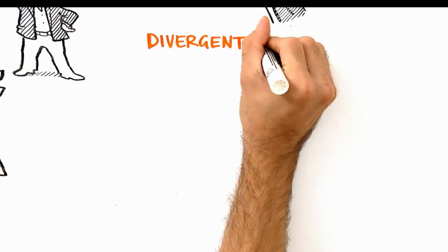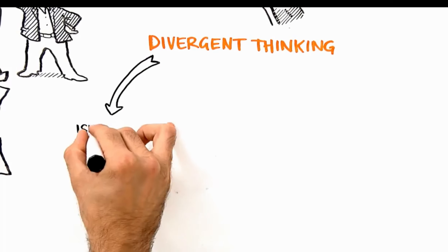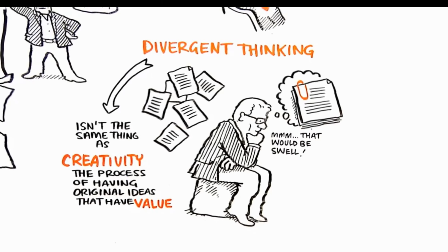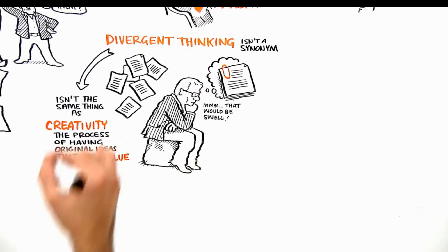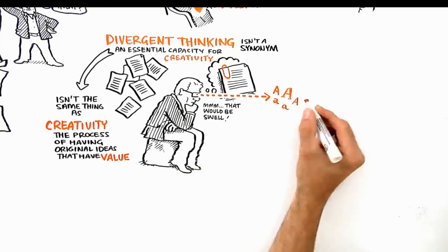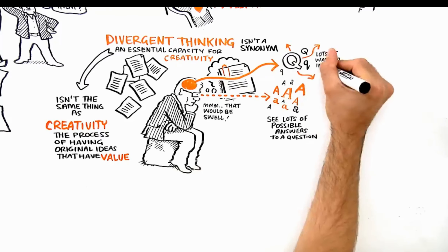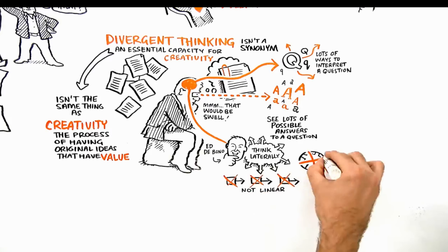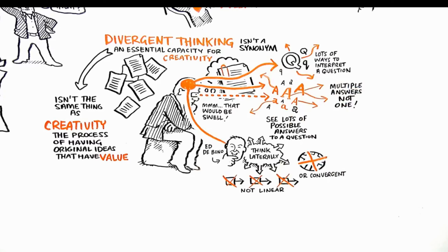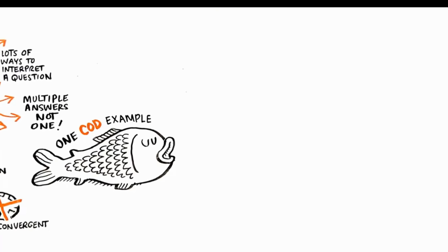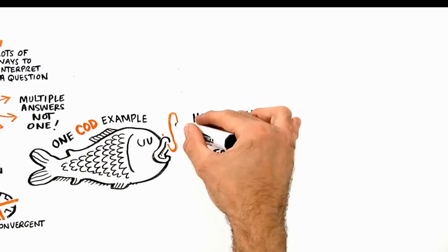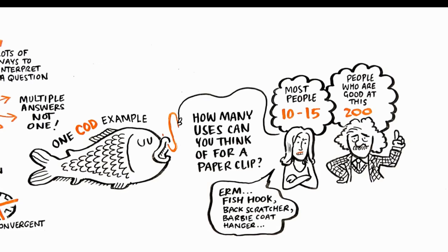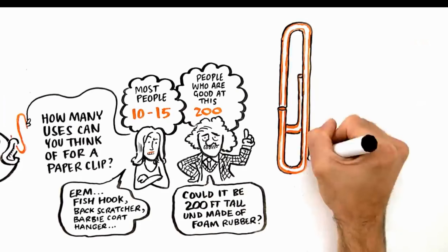There was a great study done recently of divergent thinking, published in a book called Breakpoint and Beyond. Divergent thinking isn't the same thing as creativity — I define creativity as the process of having original ideas that have value. Divergent thinking isn't a synonym, but it's an essential capacity for creativity. It's the ability to see lots of possible answers to a question, to think laterally rather than just in linear or convergent ways. One kind of classic example: people might be asked, how many uses can you think of for a paperclip? Most people might come up with 10 or 15. People who are good at this might come up with 200 — by asking, could the paperclip be 200 feet tall and made out of foam rubber? Does it have to be a paperclip as we know it?